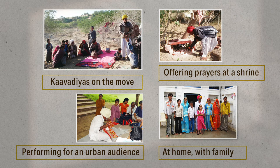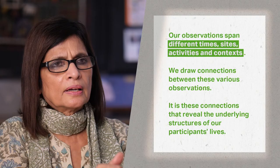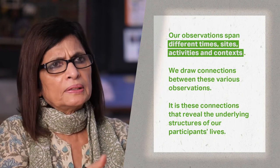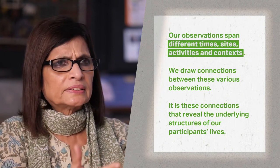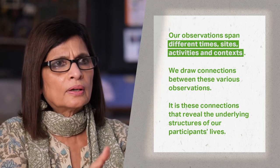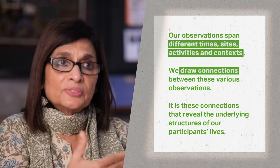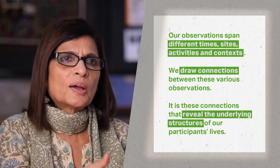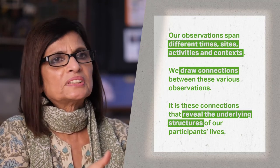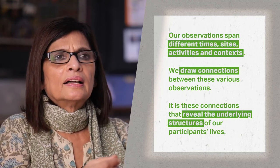During the times when they were performing and the times when they were not. This is an important aspect of fieldwork — observing the different aspects of our participants' lives. We observe the many phenomena, people, activities and locations that their context is composed of. We draw connections between different instances of observation. As we do so, we start to see the underlying web of meanings that define our participants' lives. This helps us contextualize the phenomena we are focused on and understand what it means to them.